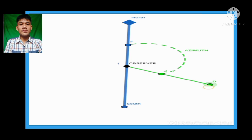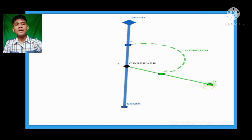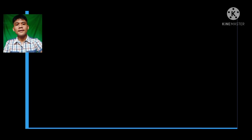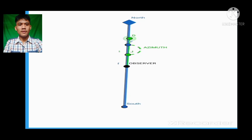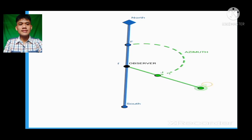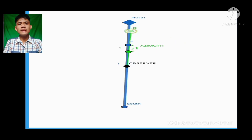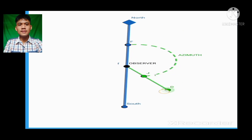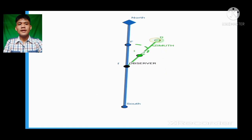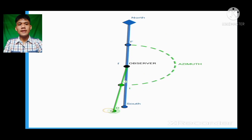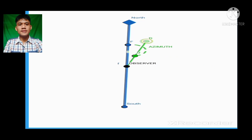This would be a short summary for azimuth: azimuth is any measurement as long as it is measured in a clockwise direction and the reference direction is the north.